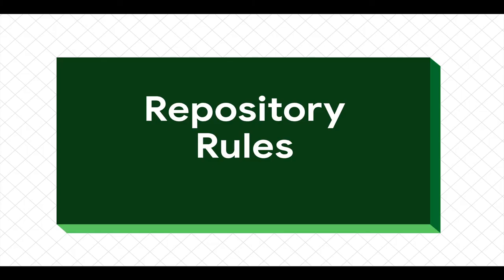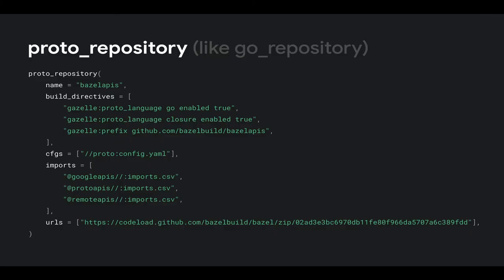Let me show you a really cool repository rule called proto_repository. If you know how go_repository works — it downloads something from the internet and runs Gazelle over those files — this does the same thing, but it has this new Gazelle extension built into it. You say which build directives and which languages you want enabled. This configuration attribute is a YAML file — instead of expressing your Gazelle directives in textual form, you can express it in YAML. That's useful because you can share it between different proto_repository rules. The import statement is sort of the magic of how it does dependency resolution.